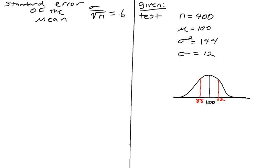Now that we've figured out our standard error of the mean, which is 0.6 in this matter, we can go ahead and figure out the probabilities of scores.